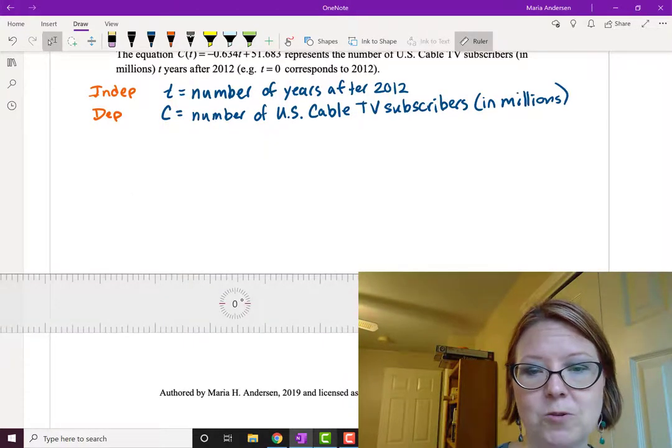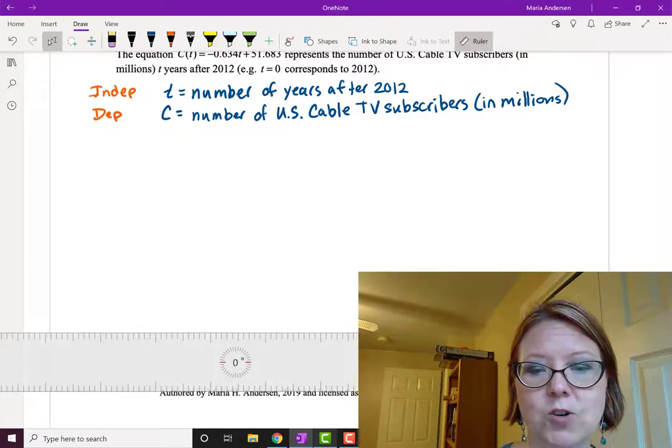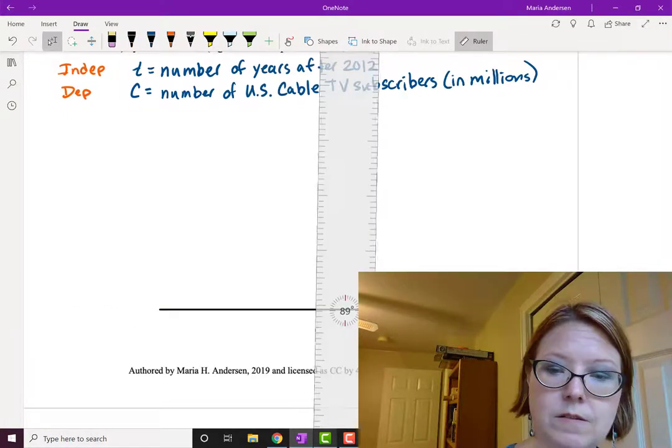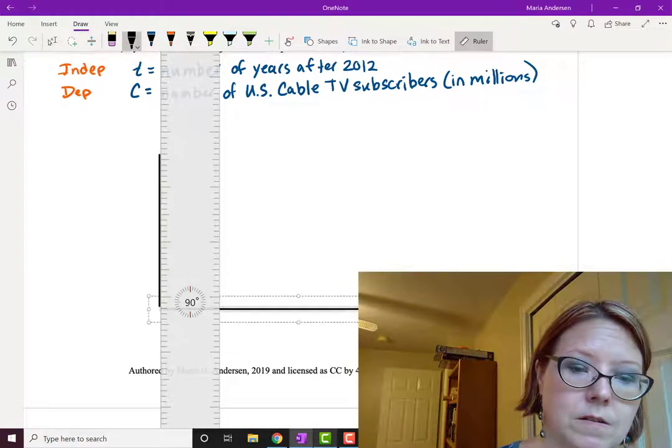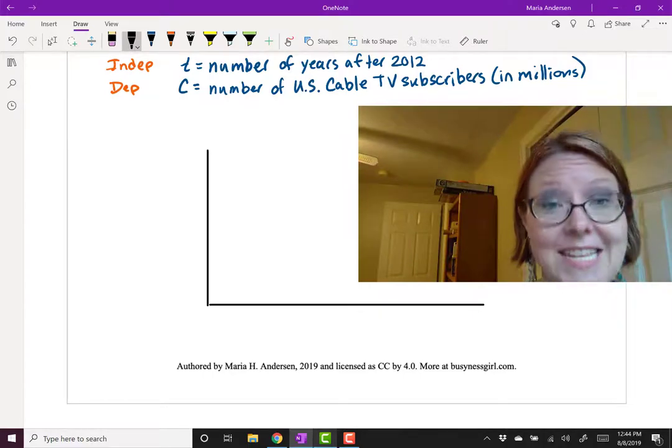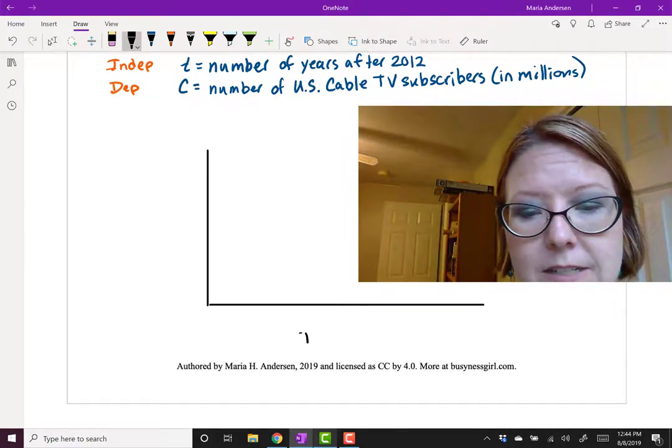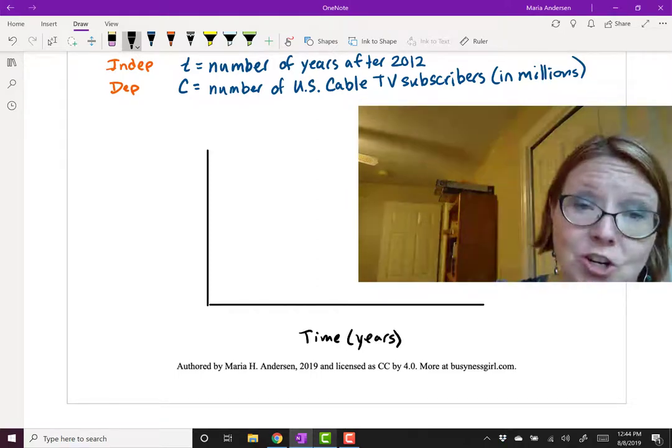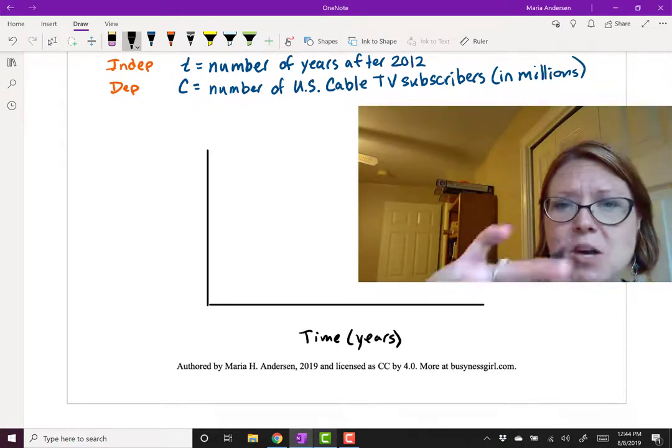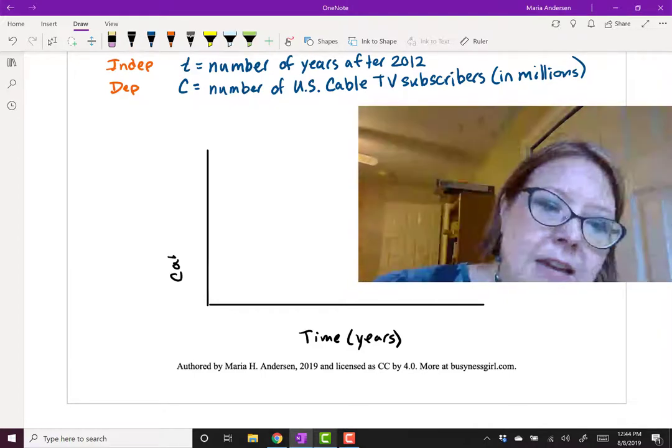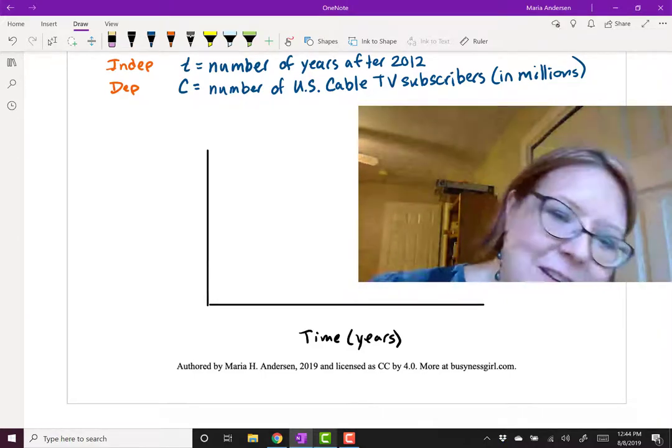I've got this handy little ruler here, so I'm going to use that to draw my axes. Now I can label which axis is which. The horizontal axis is time, so I'll write time and put the units in parentheses: years. The vertical axis is the number of cable TV subscribers in millions. Make sure you leave yourself enough space that you can add a scale.